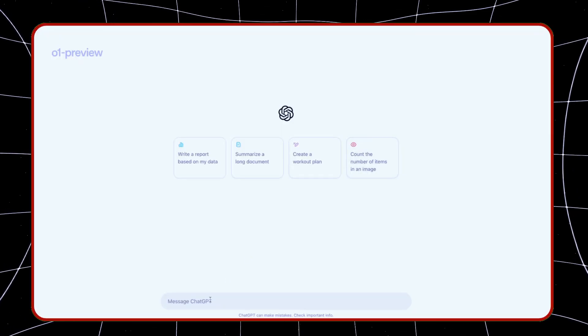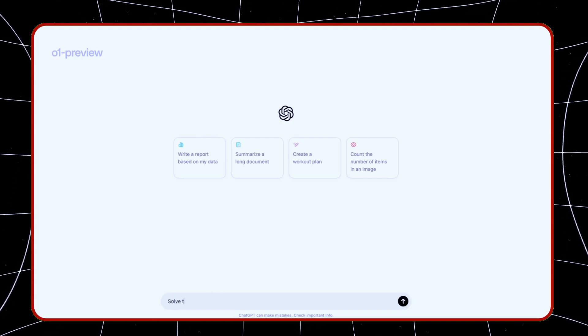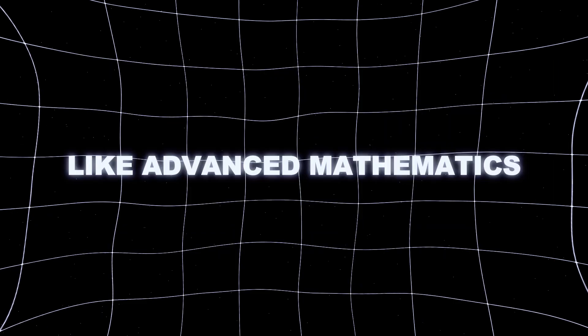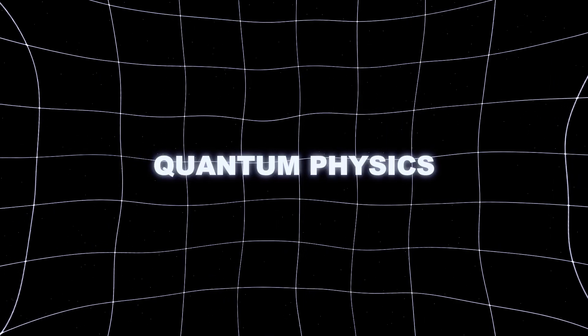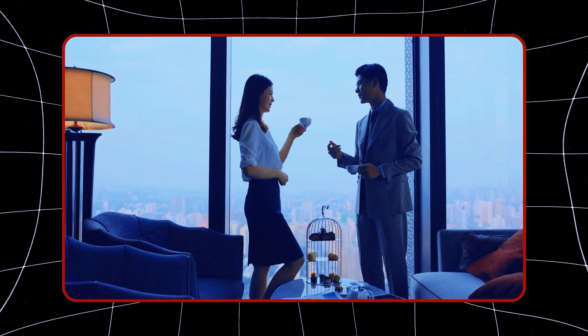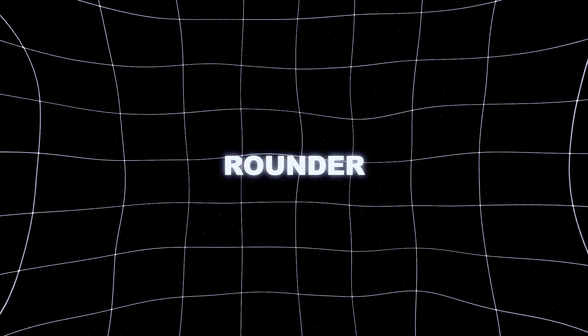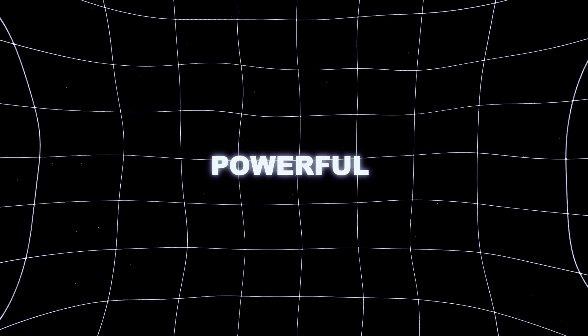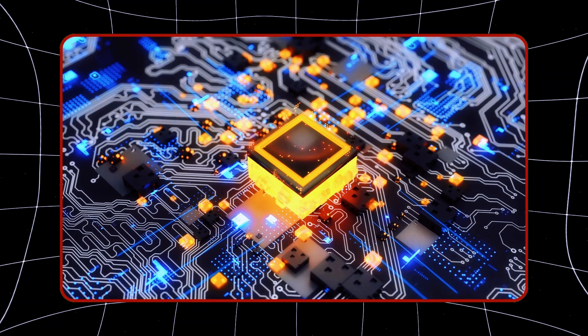For starters, OpenAI didn't just design them to create better text responses. These models were built to excel in academic fields like advanced mathematics, quantum physics, and complex coding tasks. Think of it like this. Where GPT-4 is an all-rounder, O1 is the brain surgeon. It's precise, powerful, and built for the most intricate challenges.